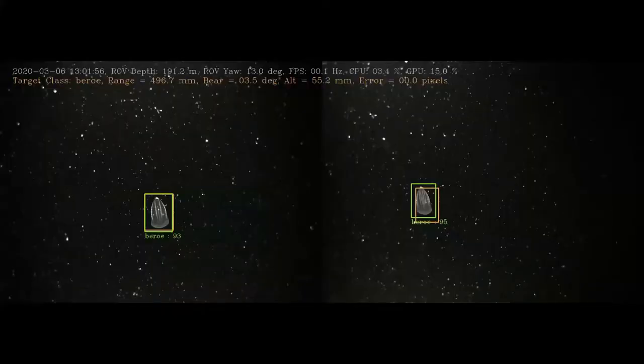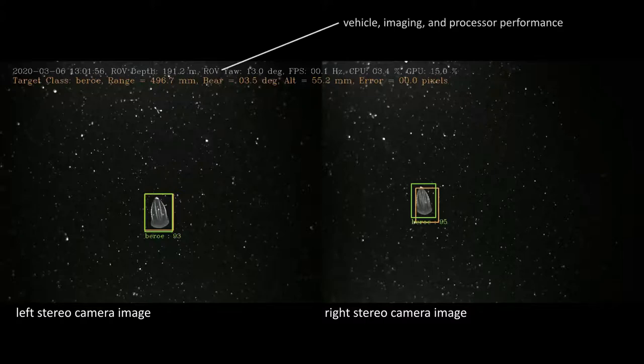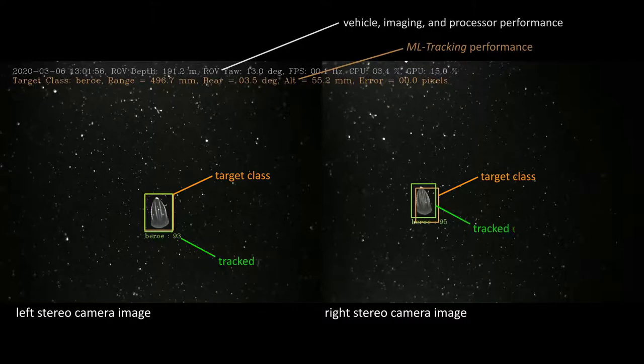As I step through each of these use cases, I want to orient you to the videos I'm about to show. You can see the left and right stereo camera image, and the vehicle imaging and processor performance is shown in gray text at the top, and the ML tracking algorithm performance is shown in brown text below it. The target class is indicated by orange bounding boxes and the green bounding boxes indicate the current tracked class. All of these videos were collected with the mini ROV between 200 and 500 meters deep in Monterey Bay.